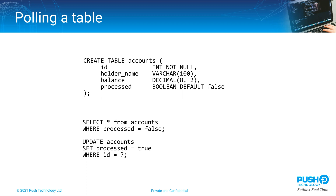Another approach could be to have a flag on each table to say whether it has been scanned or not, so you can select any new rows and change the flag once it's been read and processed. The complexity is partially moved to the table writer which now needs to set the flag for each operation. In this example you could miss updates if more than one happens during a poll cycle, and it doesn't cater for deleted rows at all.